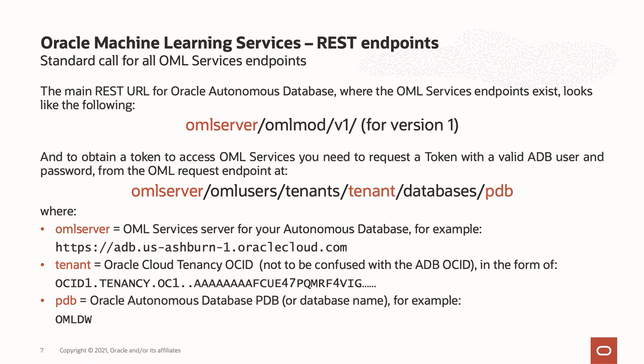The tenancy we need is from your OCI account — your OCI account has a unique tenancy. The PDB is the Autonomous Database PDB. Note the tenancy is not the database tenancy, but the user's account tenancy. The PDB is the name of your Autonomous database.